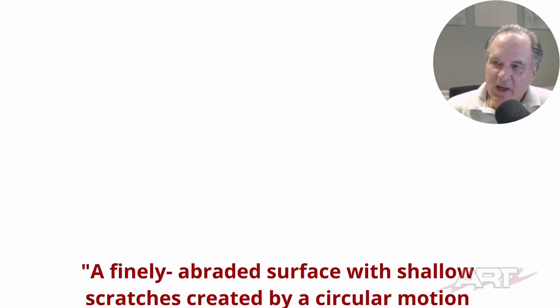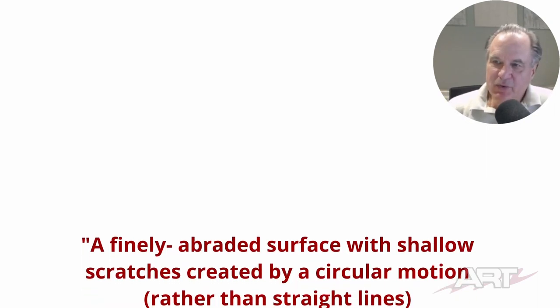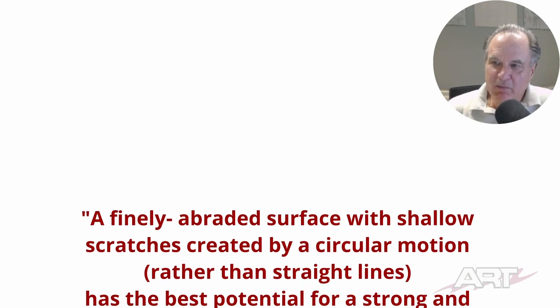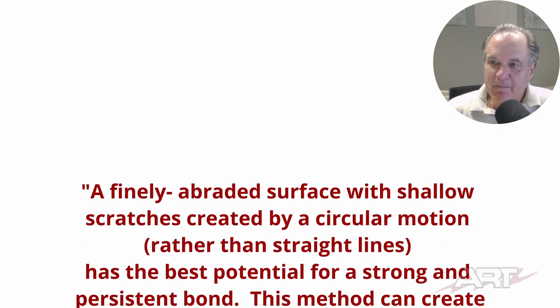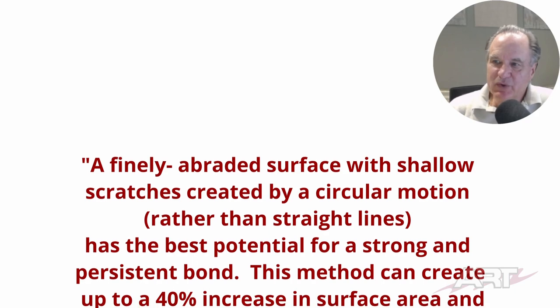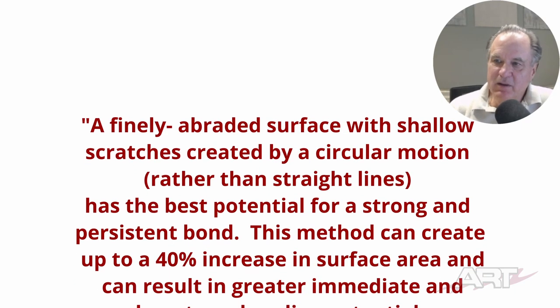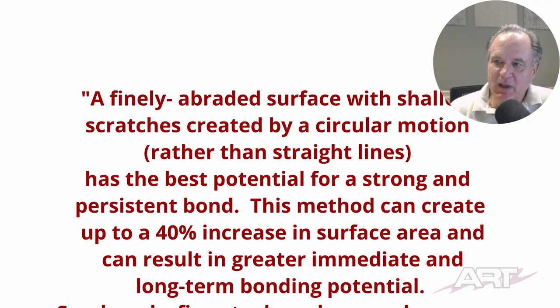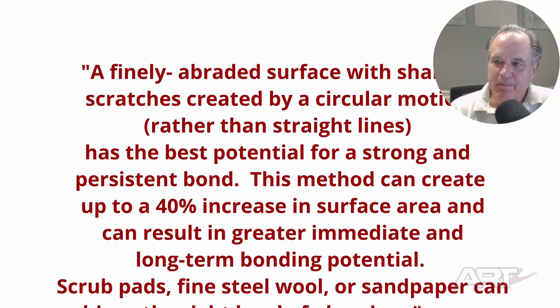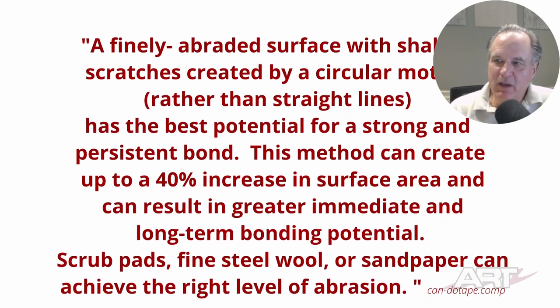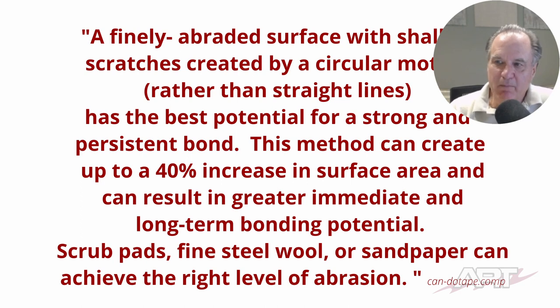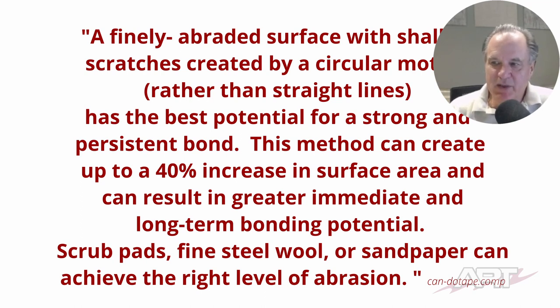I found this interesting: a finely abraded surface with shallow scratches created by a circular motion rather than straight lines has the best potential for a strong and persistent bond. This method can create up to a 40% increase in surface area and can result in greater immediate and long-term bonding potential. Scrub pads, fine steel wool, or sandpaper can achieve the right level of abrasion.